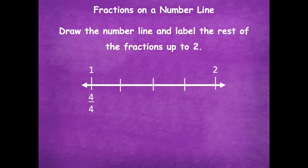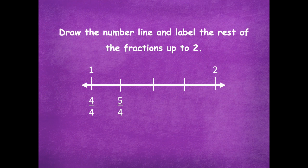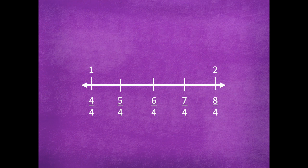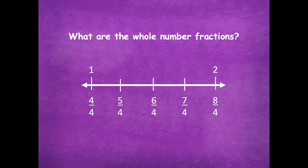Draw your number line from one to two and split it into four equal parts, then we'll draw in our fractions together. Click play when you're ready for the next step. All right, so your number line should look just like mine. After four fourths, the next part would be five fourths, then six fourths, seven fourths, and eight fourths. Eight fourths represents two. You can check that you're at a whole number like eight fourths because if you take eight and divide it by four you get the whole number two, just like four divided by four equals one.